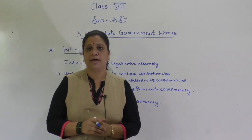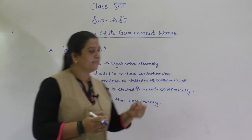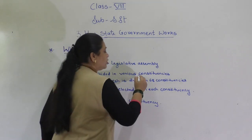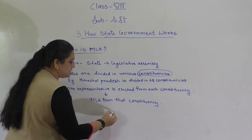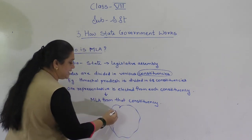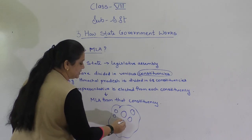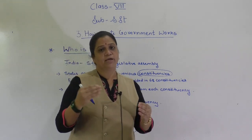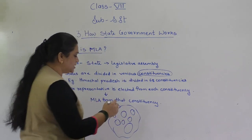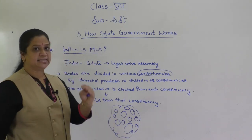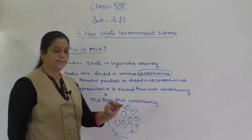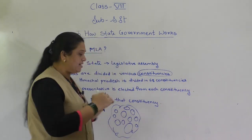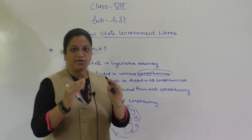Now let us move to how the election process takes place. Our country India is divided into states, and each state is divided into different constituencies. It is not necessary that each constituency is of the same size — it depends on the number of people, that is the population. For example, Himachal Pradesh is divided into 68 constituencies.